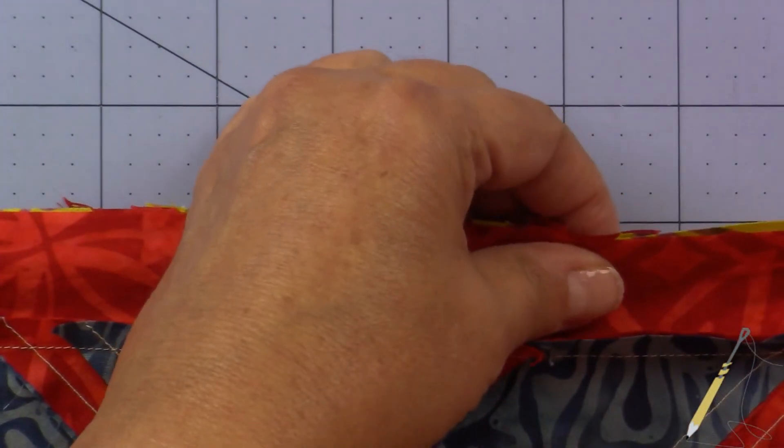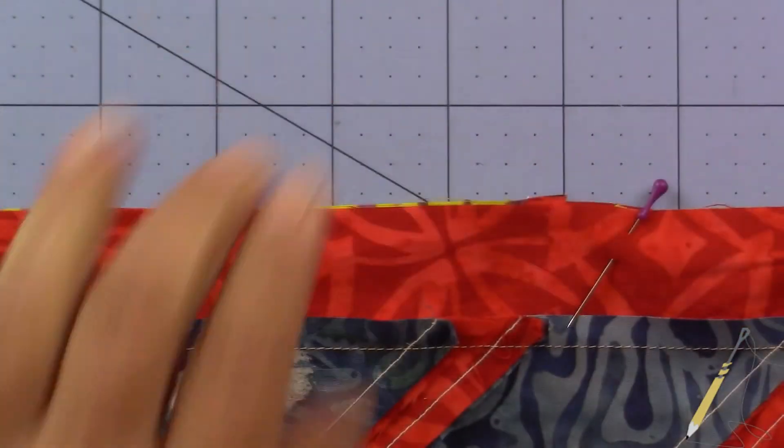Okay, so that's how you do it when you're stitching a sashing to a block.